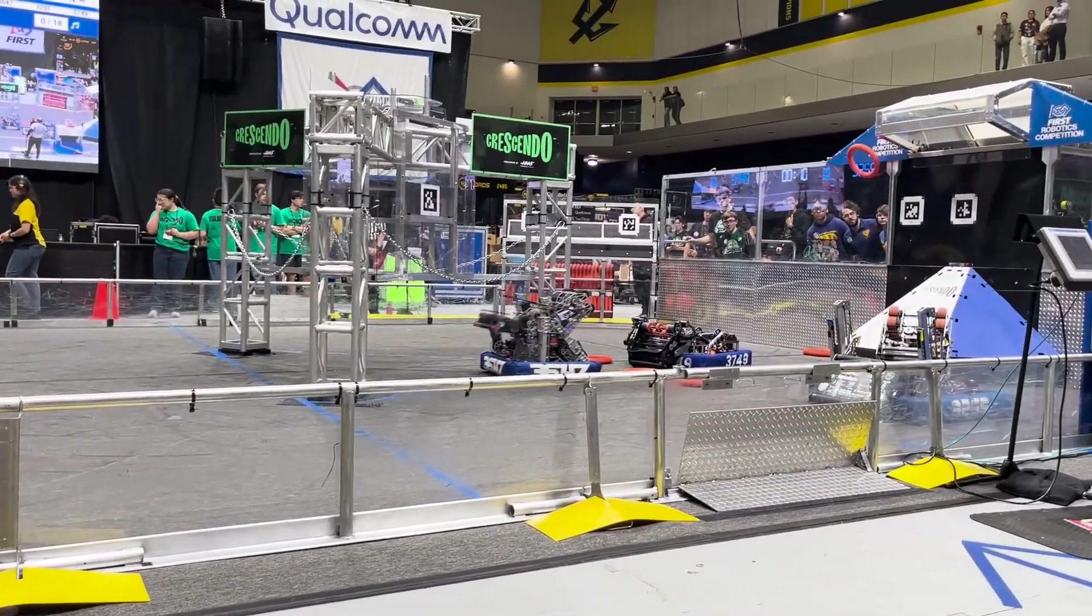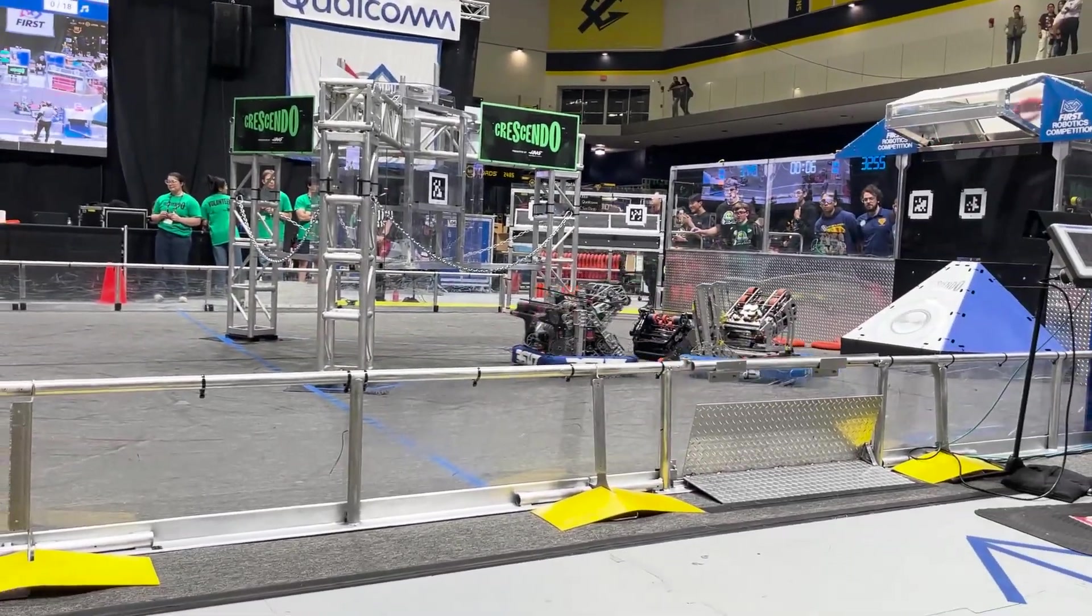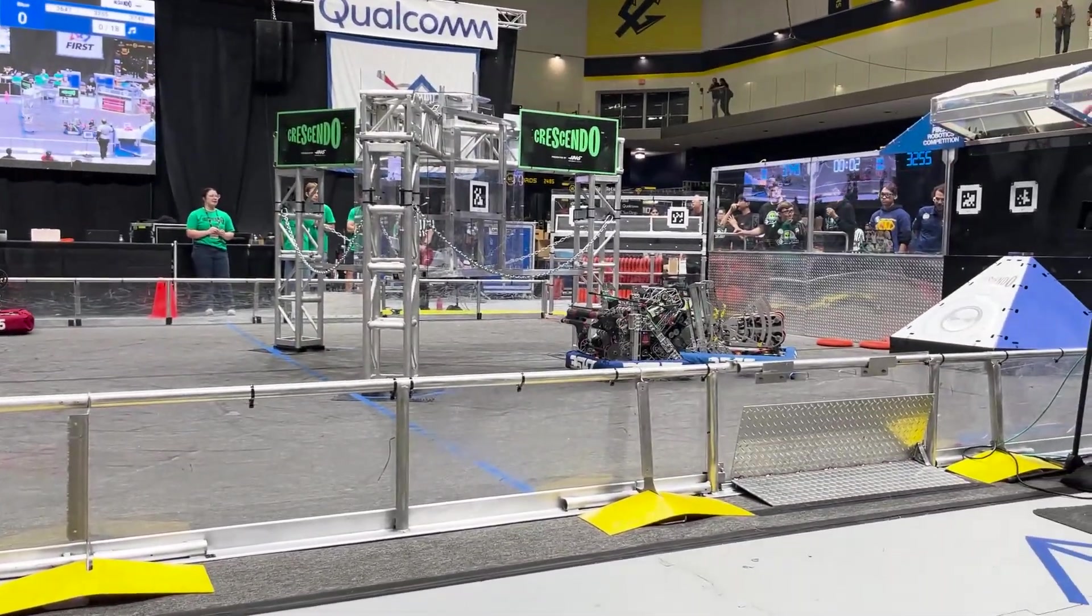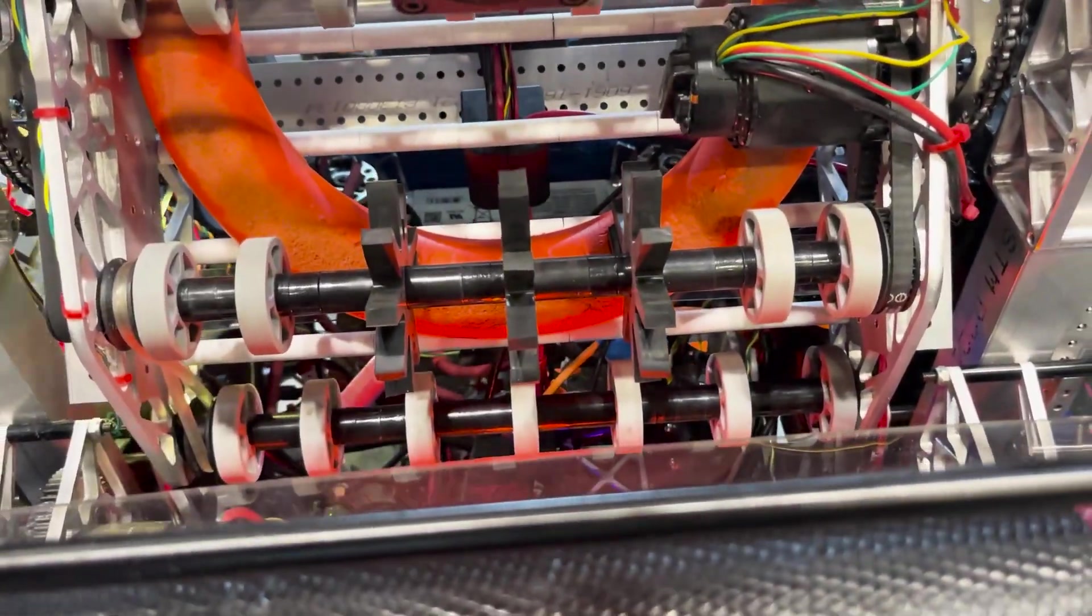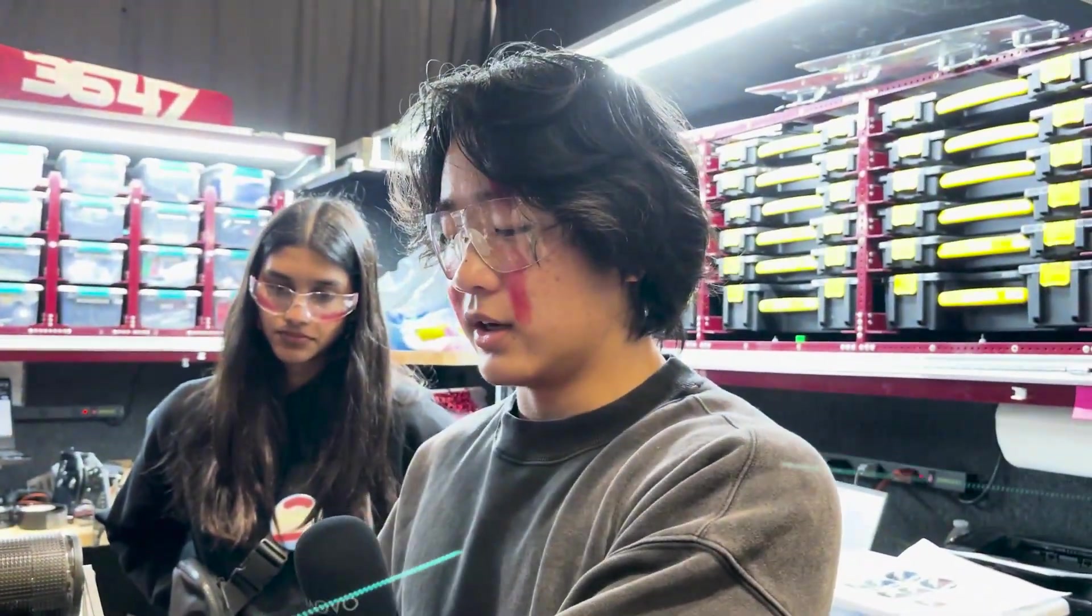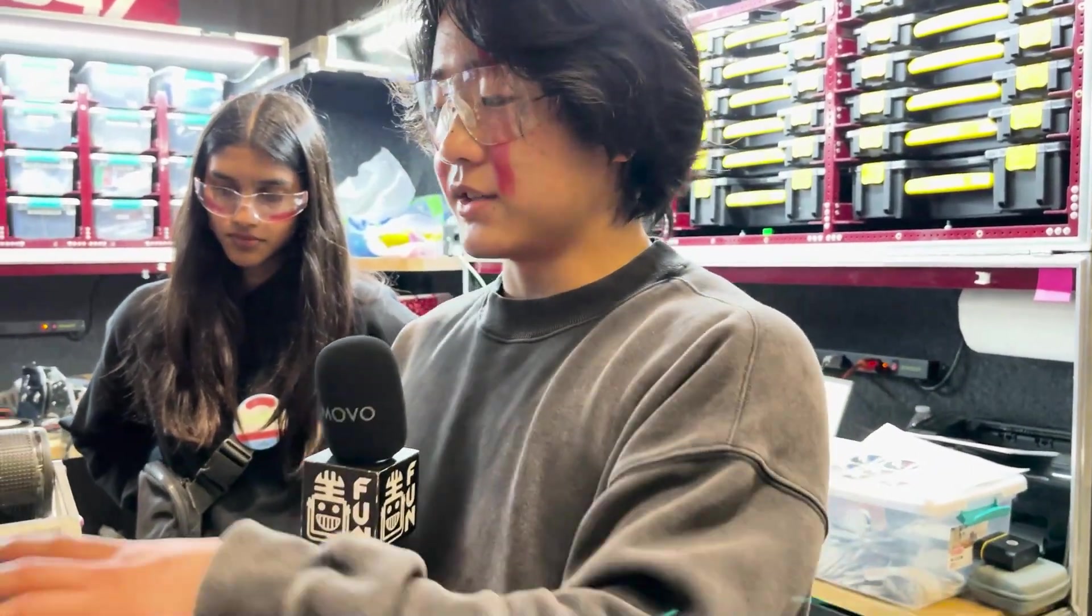So during auto we have a custom path follower that allows us to override both the rotation, x and y whenever we want. So whenever we see a note near the center line, no matter if it's still there or if it's been bumped by another team, we can still just automatically move to get it. So even if another team bumps them, it doesn't mean we miss a note.